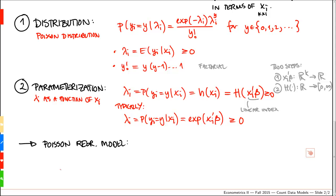Which we can write as the probability that yi is equal to y, given xi, and given parameters beta, is equal to the exponential of minus the exponential of xi prime beta, multiplied by the exponential of xi prime beta to the power of y, and we divide through by the factorial of y. So, note that all we did was just plug in the expression for lambda i in terms of xi prime beta.